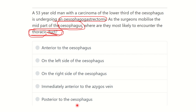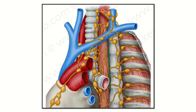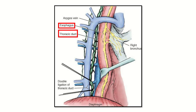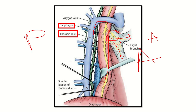Looking at this image, we can see the esophagus and its surrounding structures in the middle part. Anterior to the esophagus is the trachea, and posterior to the esophagus is a structure, with the vertebra and sympathetic chain further posteriorly. The trachea bifurcates into the right and left bronchi, confirming which side is anterior and which is posterior.